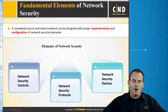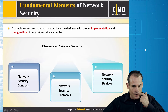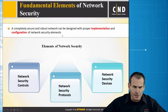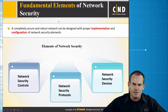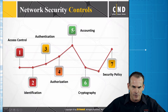Our fundamental elements of network security are: network security controls, security protocols, and network security devices. A completely secure and robust network can be designed with proper implementation and configuration of network security elements. We'll be looking at examples in each category.